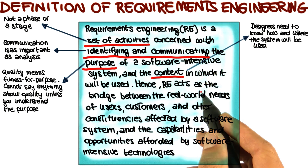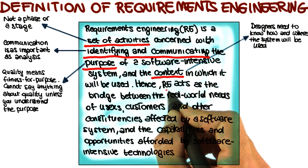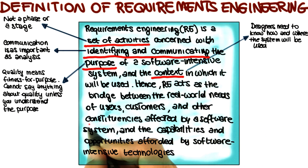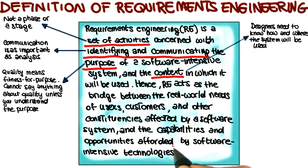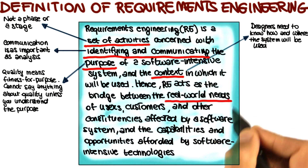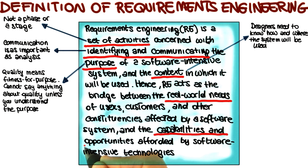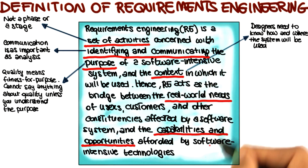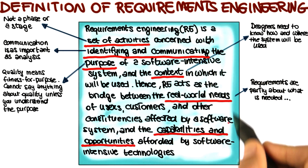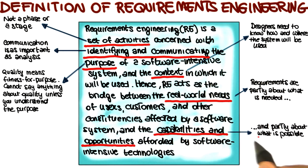Now let's continue and read the second part of the definition, which says that requirements engineering acts as the bridge between the real world needs of users, customers, and other constituencies affected by a software system and the capabilities and opportunities afforded by software intensive technologies. We can point out a few interesting and relevant points here. Let me start by highlighting two parts: real world needs, and capabilities and opportunities. They are telling us that requirements are partly about what is needed — the real world needs of all these stakeholders — but also partly about what is possible, what we can actually build. We need to compromise between these two things.